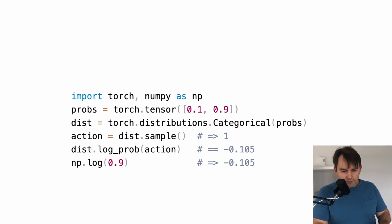After we sample from our distribution, we can evaluate a given action using this log_prob function. For example, in our case, we sampled action 1. So the probability of that action is 0.9. After we take the log of that, we get negative 0.105. And we can verify that this is the case by taking the log of 0.9.